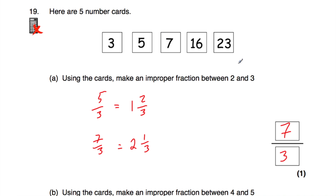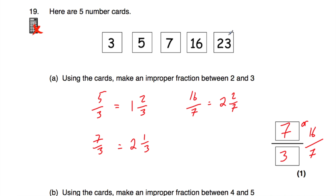Checking other possibilities: 16 thirds — too big; 16 sevenths gives how many 7s go into 16? That's 2 remainder 2, so 2 and 2 sevenths — that also works. 23 over 7: 3 times 7 is 21, so that's going to be 3 and something — not between 2 and 3. So the answers for part A are either 7 over 3 or 16 over 7 — both are improper fractions between 2 and 3.